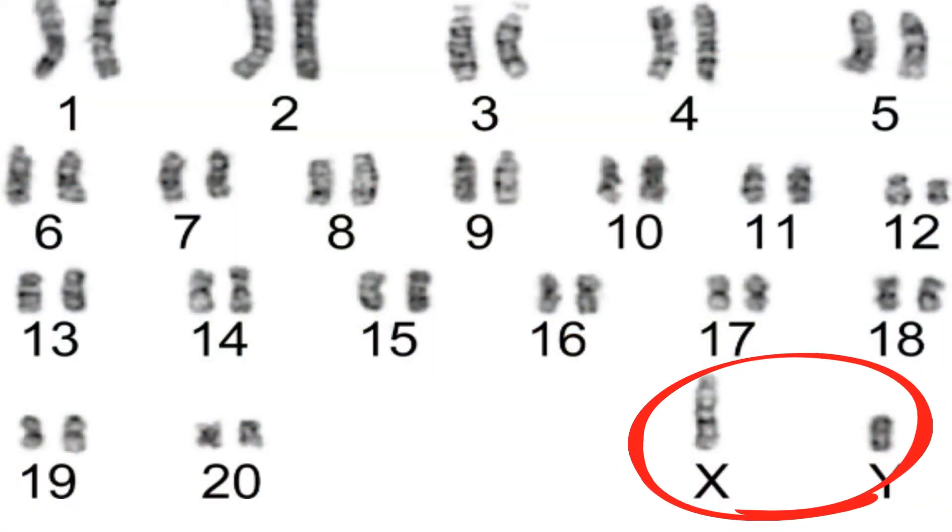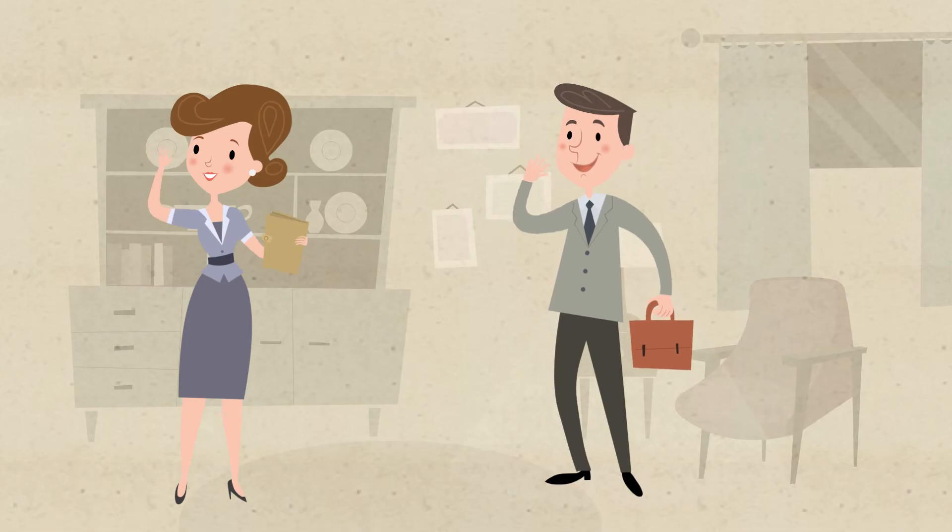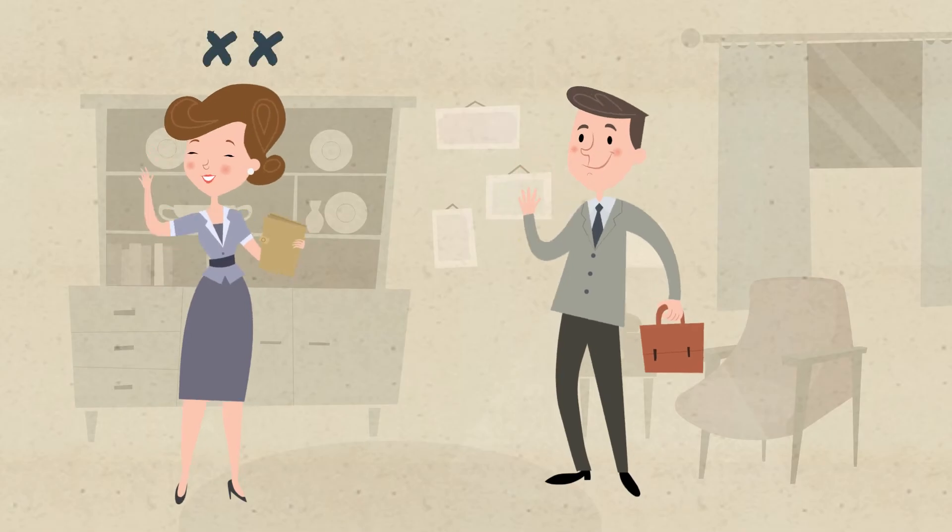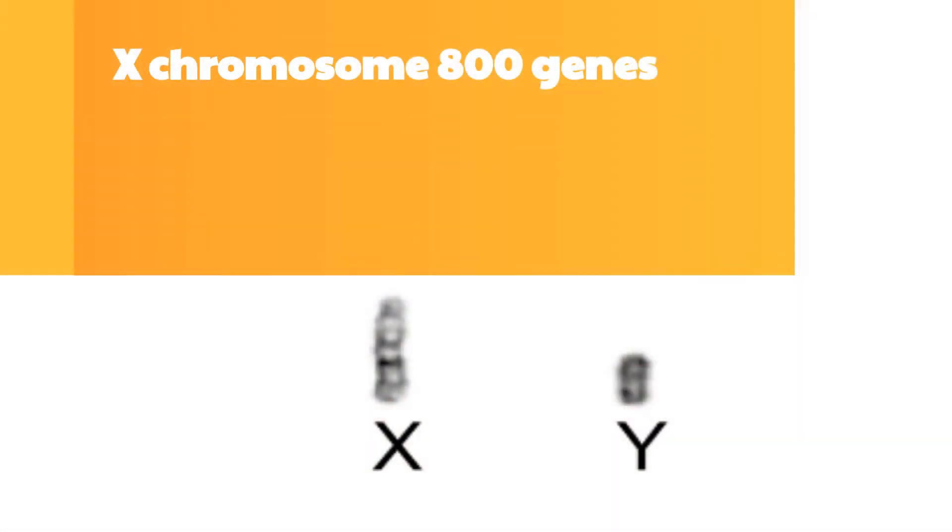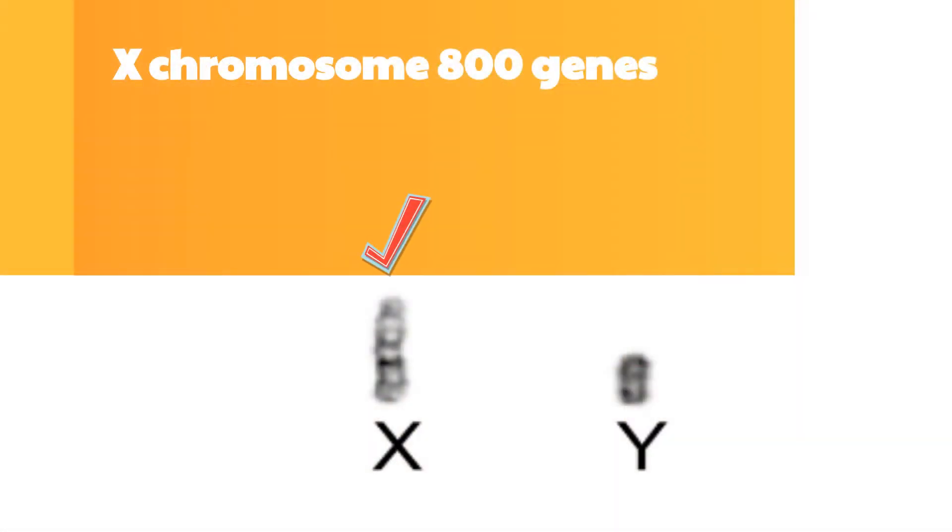An X-linked trait is a trait found on the X chromosome. Females have two X chromosomes and males have an X and a Y chromosome. The X chromosome has almost 800 genes compared to only 70 found on the Y chromosome.